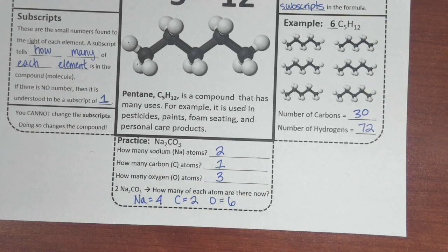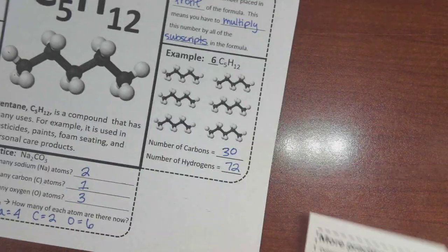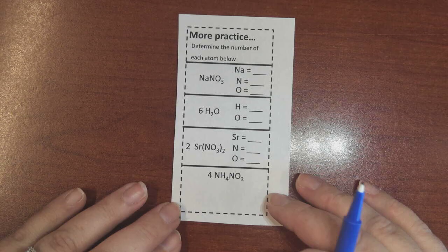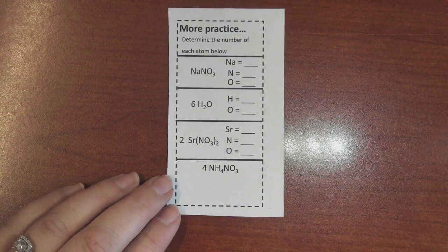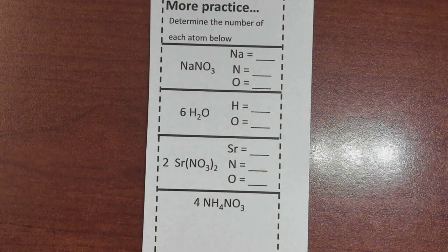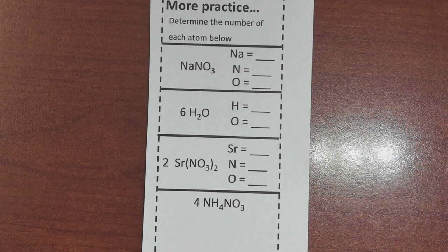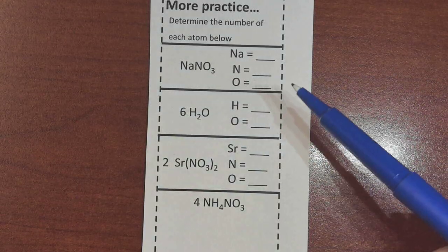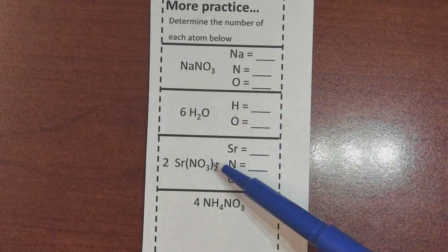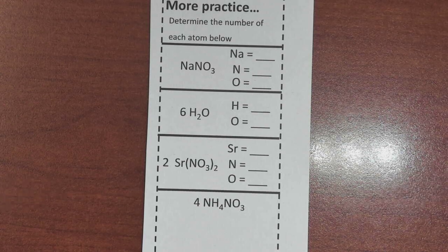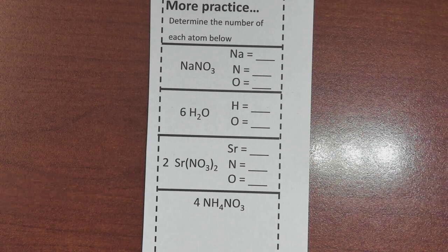We have another page that says 'more practice.' It says 'determine the number of each atom below.' Some compounds have coefficients and some don't. Pause the video if you need time to work through it, then we'll go over the answers. You'll identify for each of the four compounds how many atoms of each element are present.